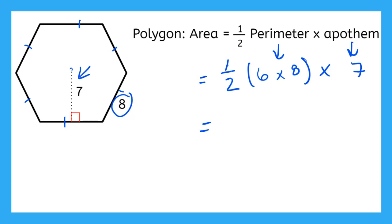All right, so my perimeter, 6 times 8, that gives me 48. And I can divide 48 by 2. That's going to give me 24, and I still have to multiply that by 7.